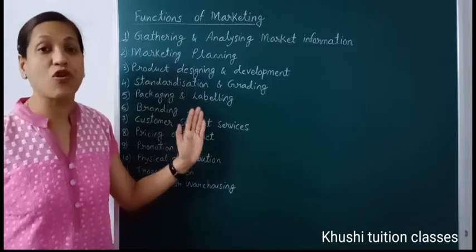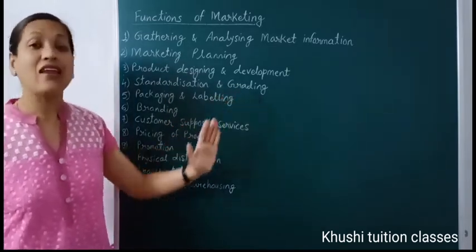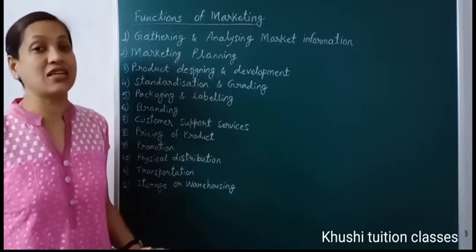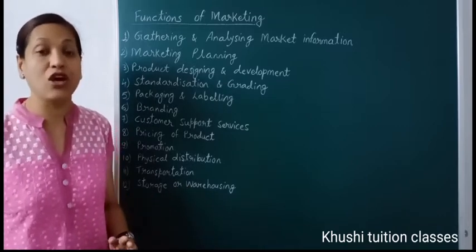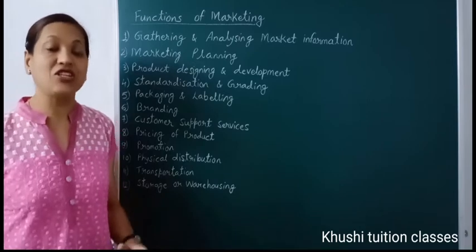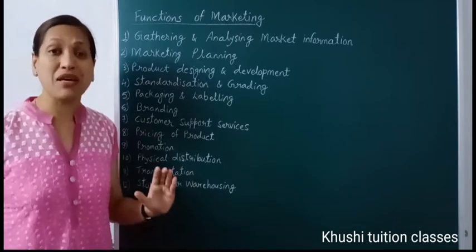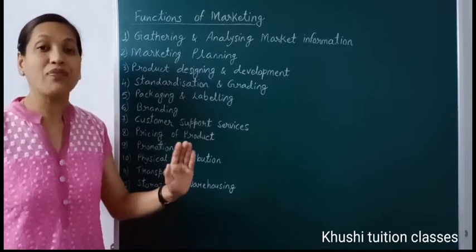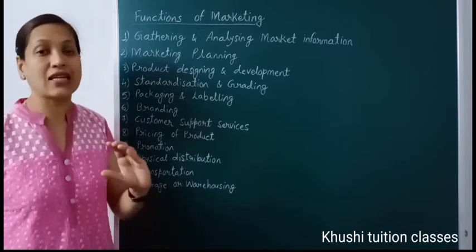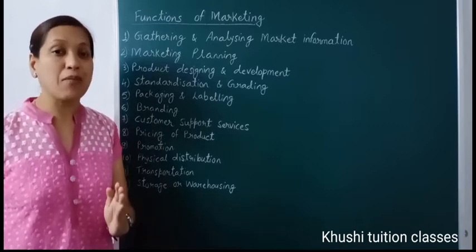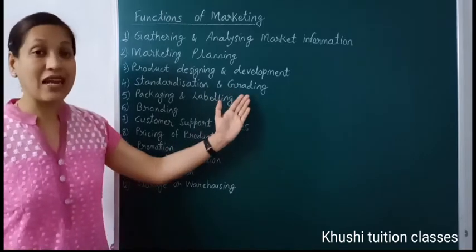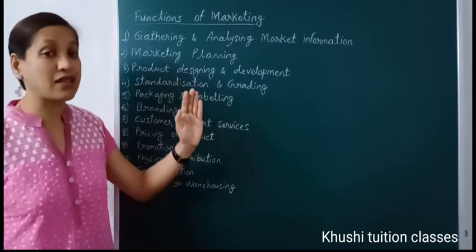Grading is done for agricultural products where fixed standards cannot be set. When you produce food grains or fruits and vegetables, you get crops of various quality levels. For example, apples that are bigger in size, have good taste and color are placed in Grade A, while smaller ones with slightly less taste are placed in Grade B. Prices are then set according to their quality. This grading is decided and done by the marketer.